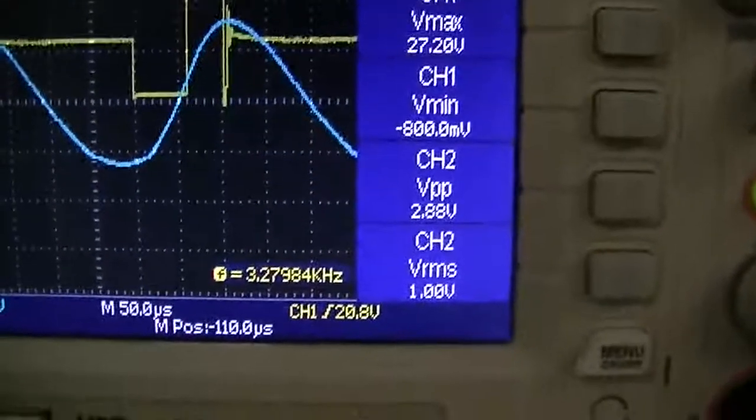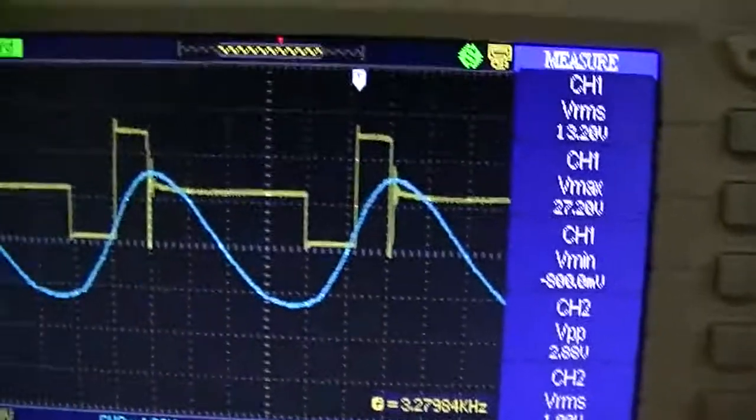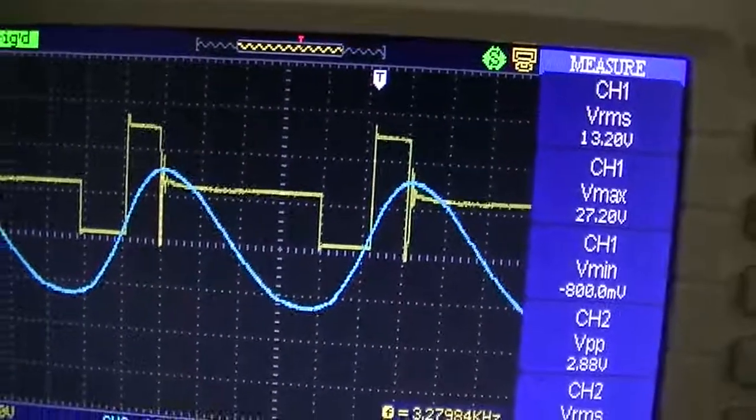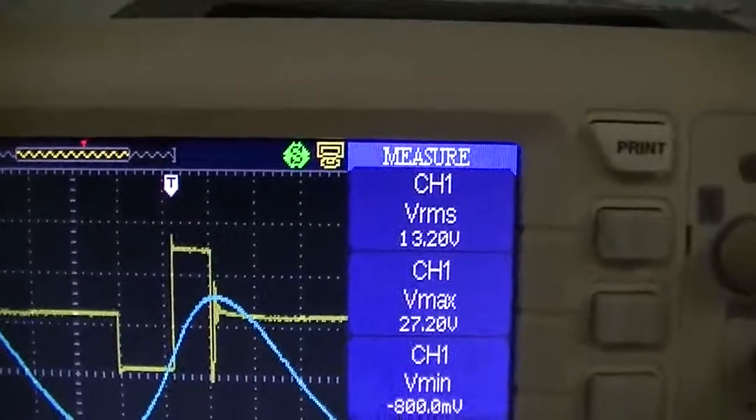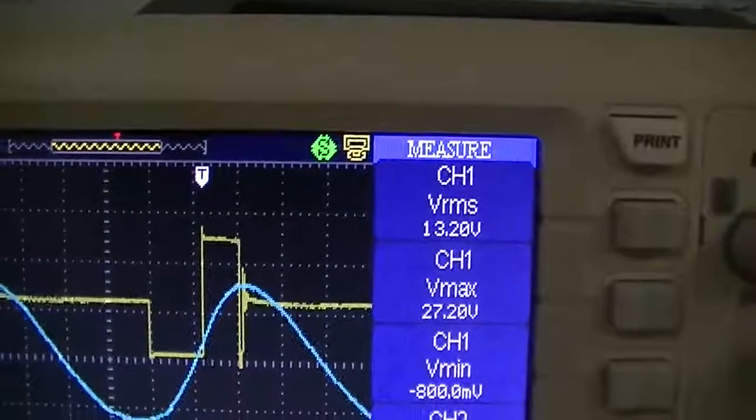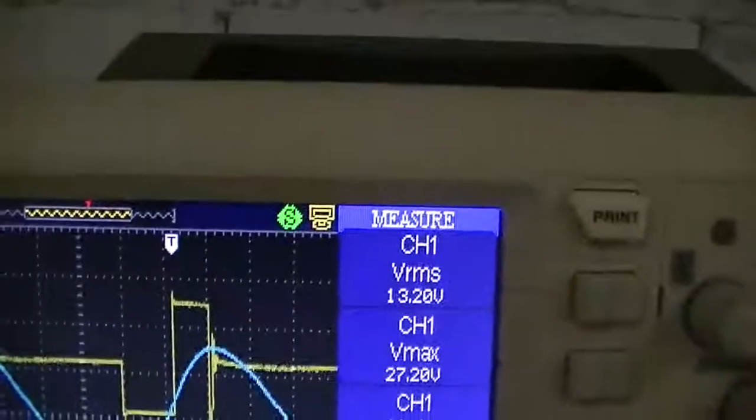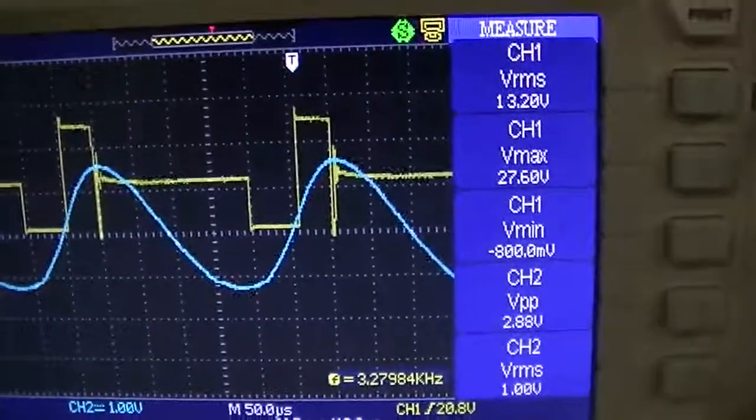So at the moment channel 2 we have a peak to peak voltage of 2.88 across our 18 ohm resistor. The maximum voltage across our emitter collector of 27.2 volts. And the RMS voltage of channel 1 is 13.2. Not that I think that matters too much at all.